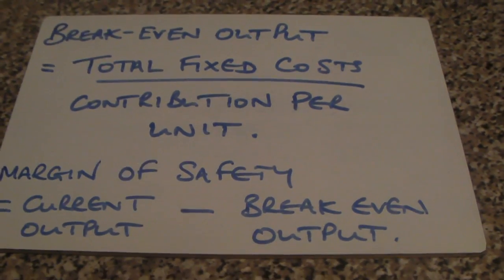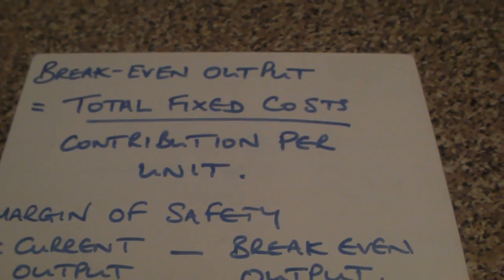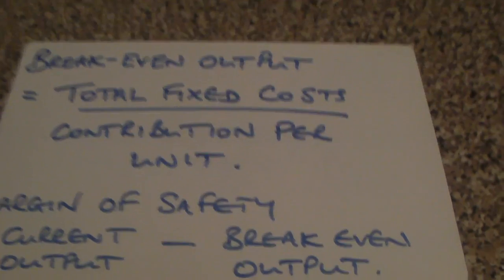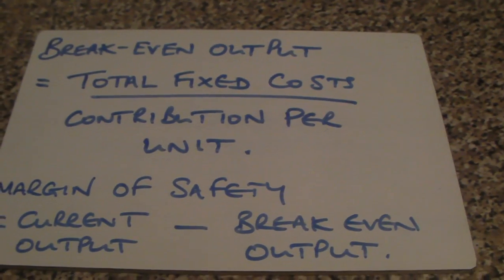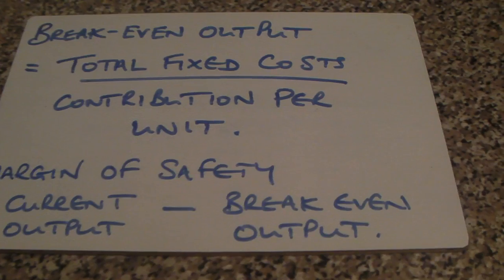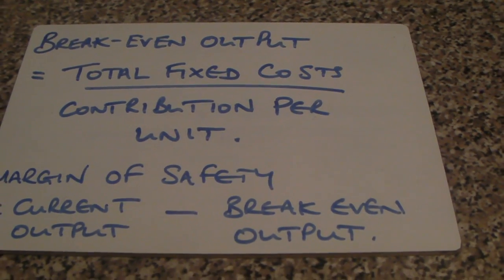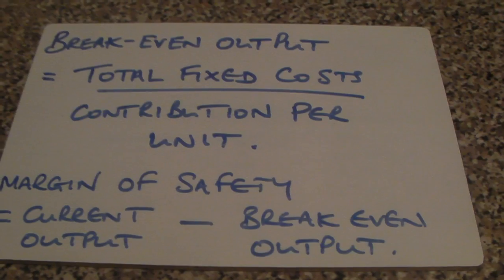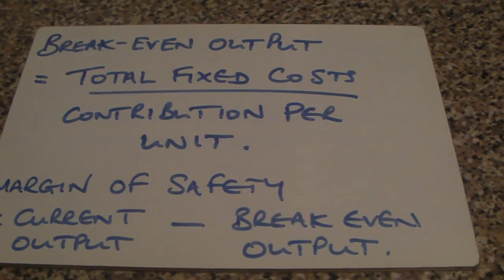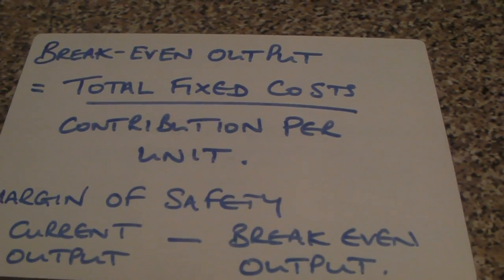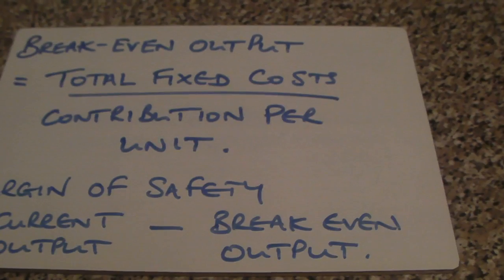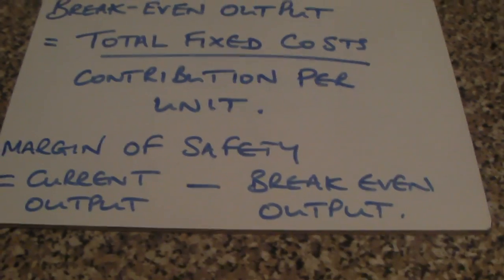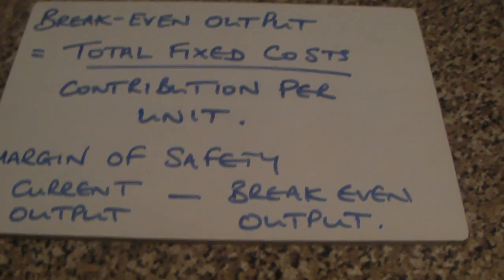Breakeven output is calculated as total fixed costs divided by contribution per unit. Remember, contribution per unit is the selling price of our product minus the variable cost of the product incurred in making it.